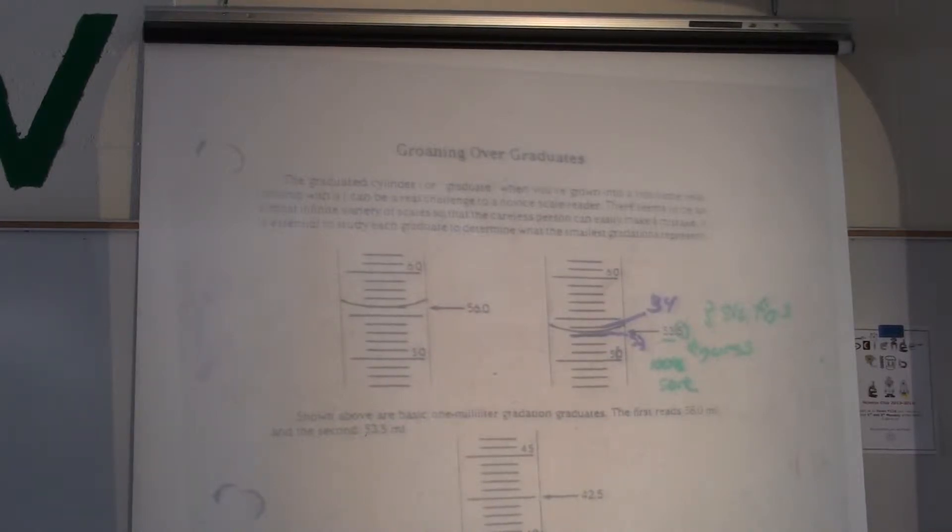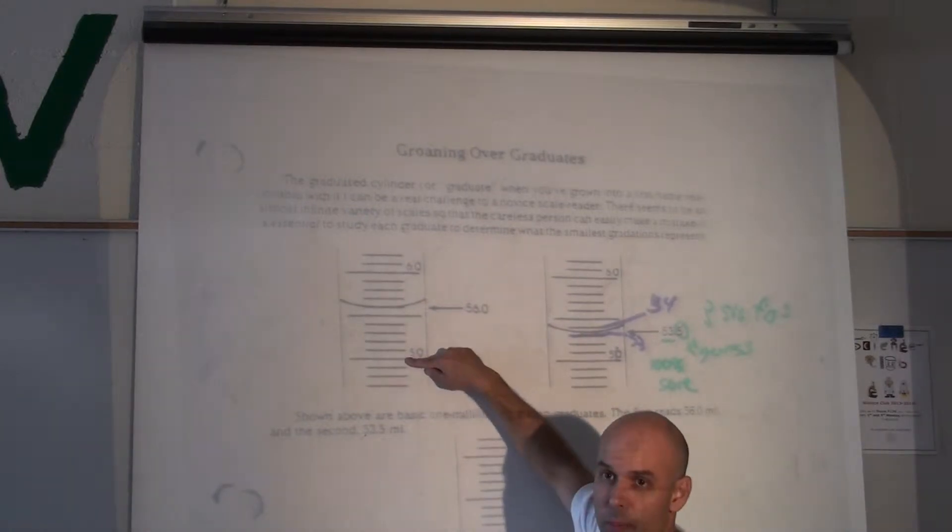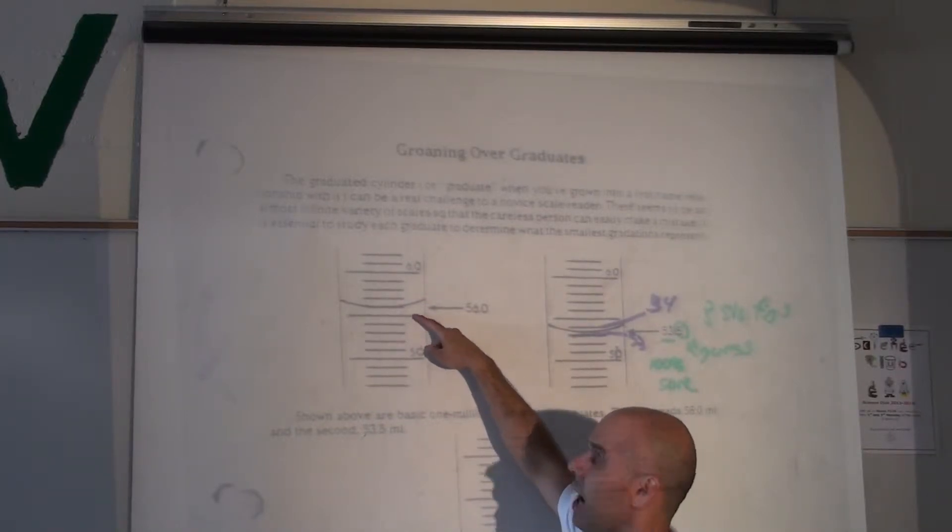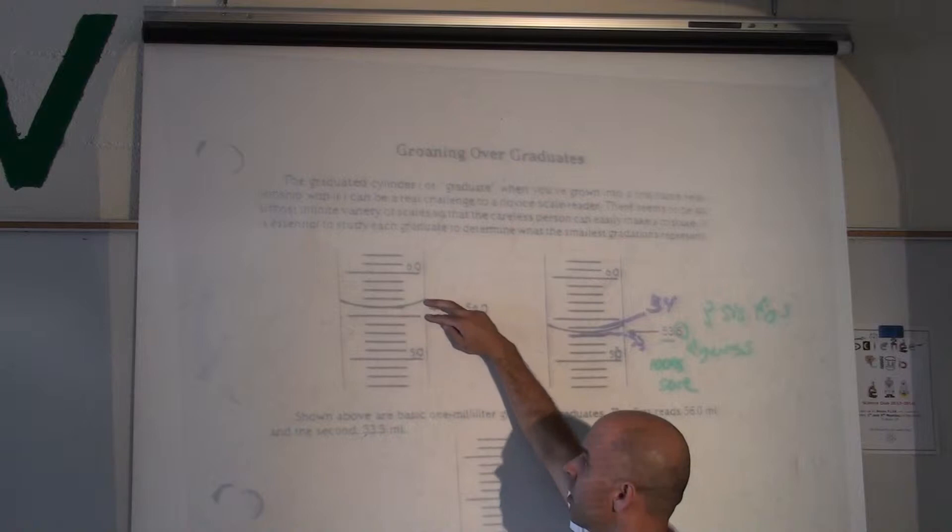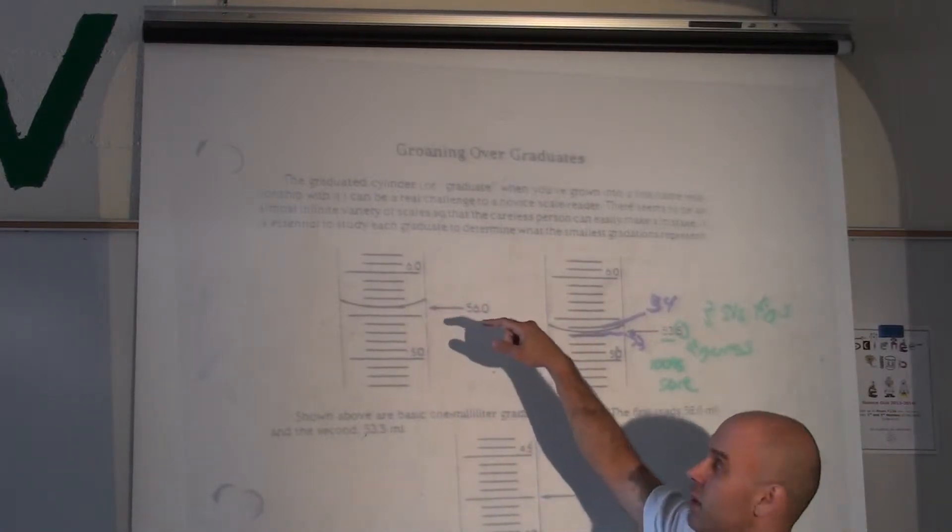So, same thing occurs in this first graduated cylinder Bailey, they're going up by ones. 51, 52, 53, 54, 55, 56. So, if it's going up by ones, you must guess to the tenths.